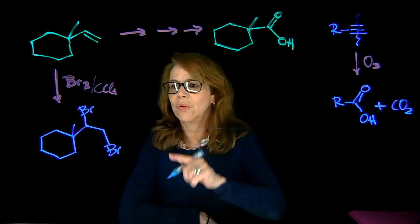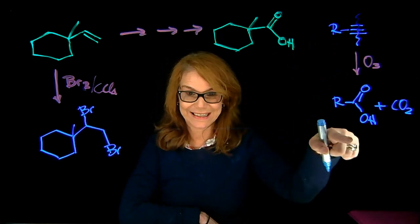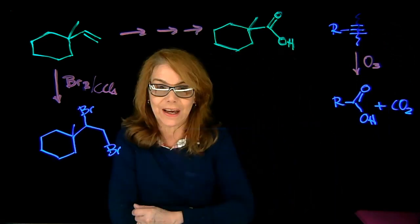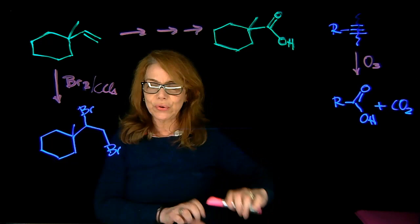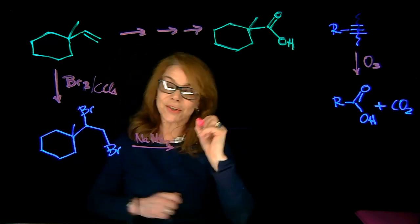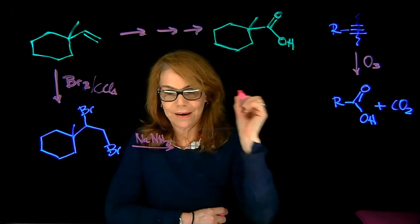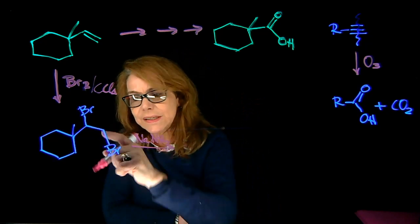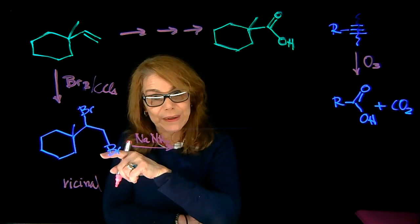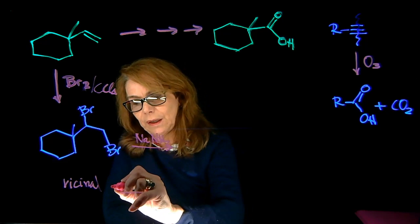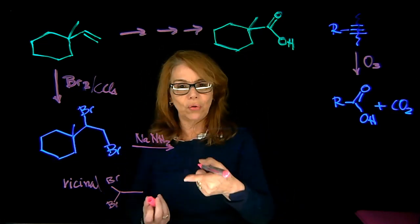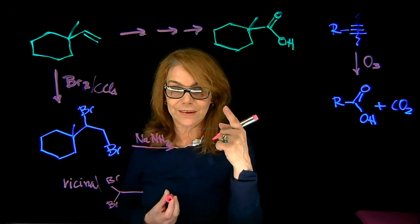Now I have that dihalide. How do I make an alkyne so that later I can do the ozonolysis? To go from the dihalide to the alkyne, I need to perform elimination reactions. We use excess sodium amide to do two consecutive E2 eliminations. We can make alkynes from either a vicinal dihalide — halogens on adjacent carbons — or a geminal dihalide — two halogens on the same carbon.